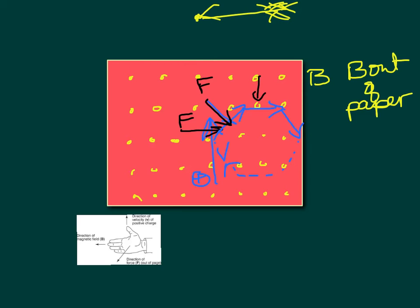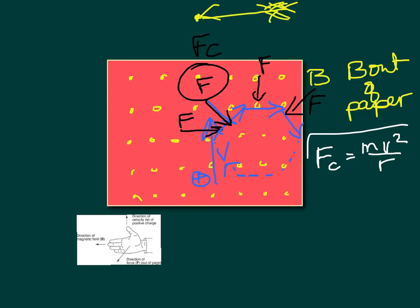The actual velocity of the particle isn't changing — it's just changing directions, not changing speed, just direction. Apply the right-hand rule again: fingers towards you, thumb to the right, and now force is pushing down. The particle is starting to make a circle. This is what they do in particle accelerators — applying a magnetic field makes the particle move in a circle. That force is a centripetal force, always pointing toward the center. So we could use fc equals mv squared over r.